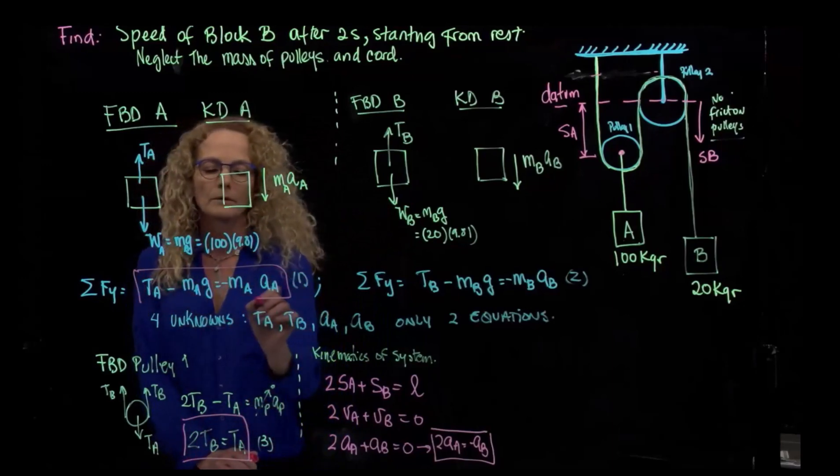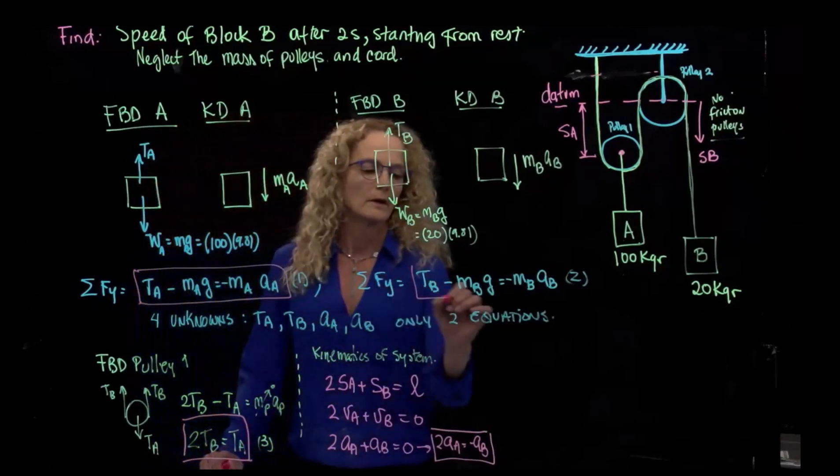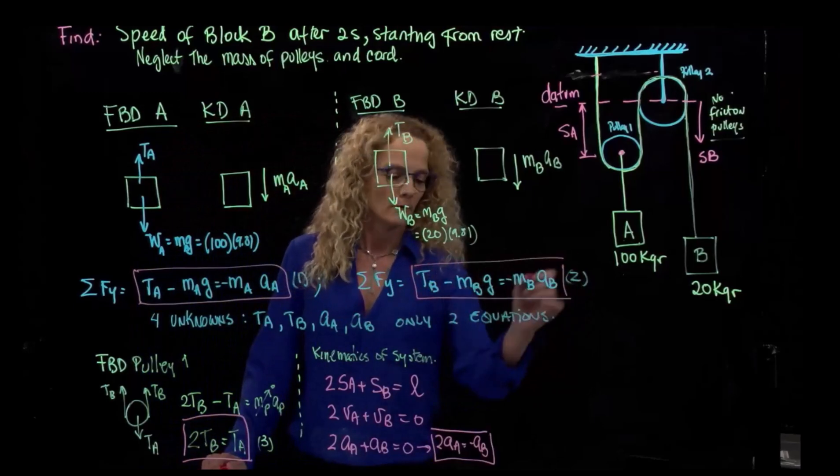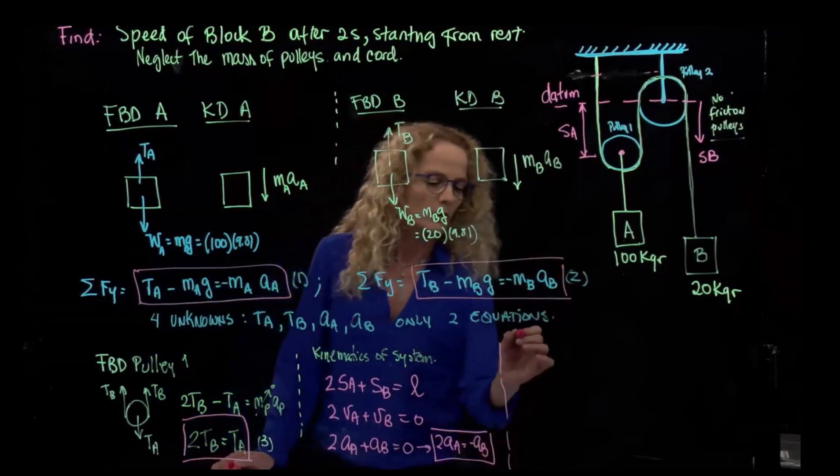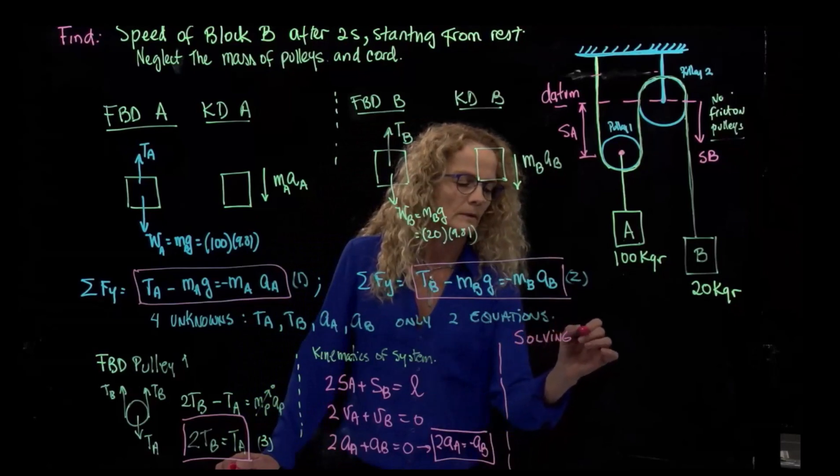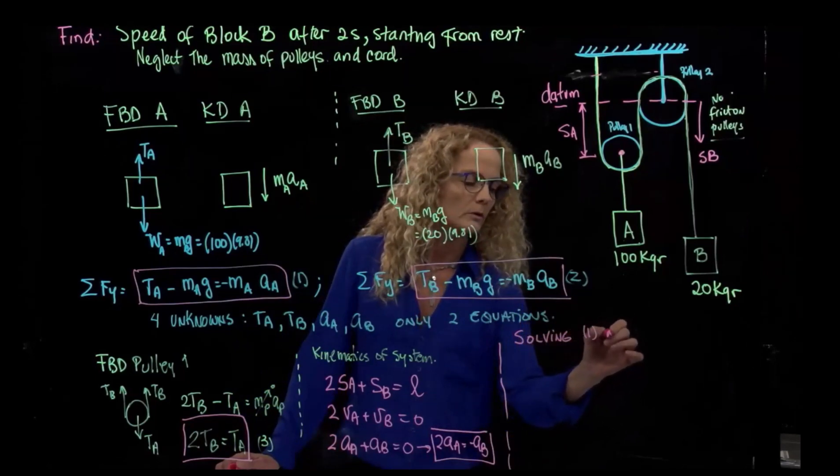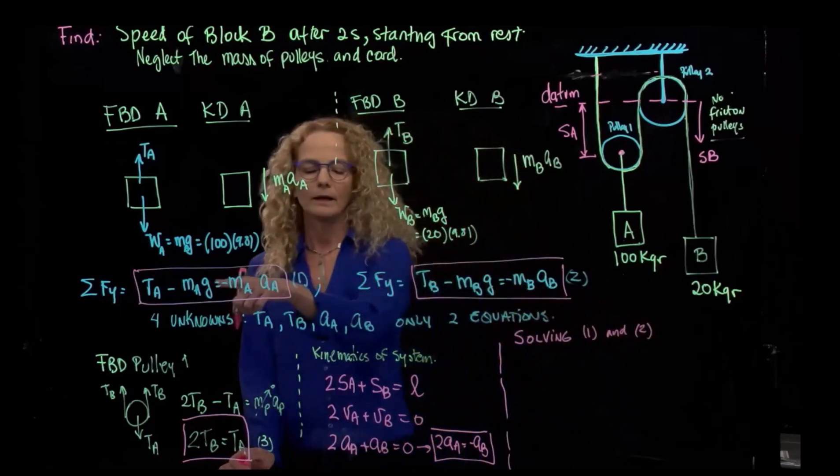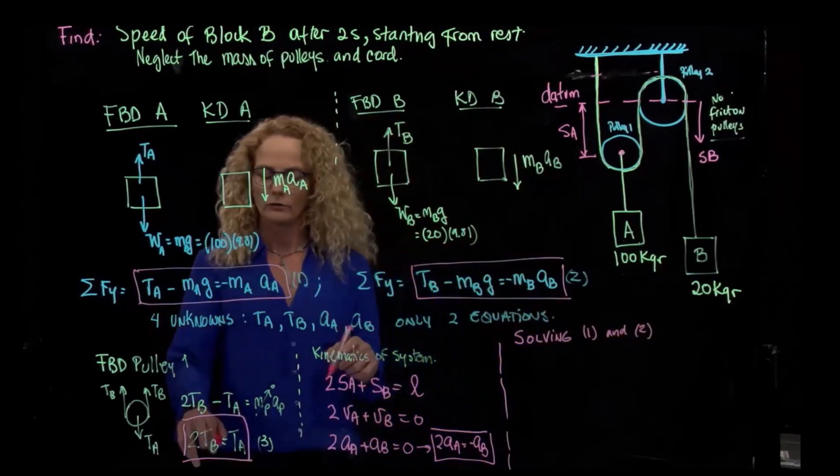So finally, solving the system of equations, one and two, so I will then, you see that the A is 2TB, so I'm going to write here 2TB minus the mass of A, which is 100 kilograms times the gravity.